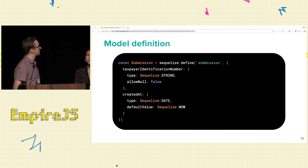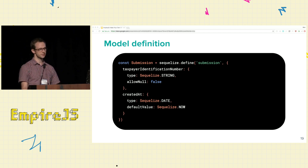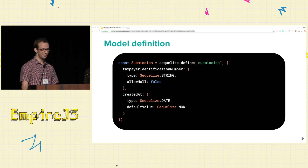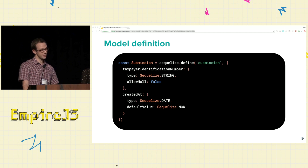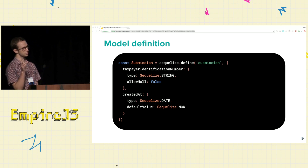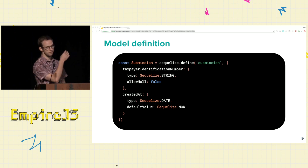We'll start with the fundamental feature of an ORM: defining your data models. In SQLize, for example — a very common ORM for Node — we defined a submission model with two fields: a Taxpayer Identification Number field, which is a unique number for a medical practice, and a created-at timestamp. You can already see clues about how the database should store that data — for example, on the TIN field we say allow null false, telling the database not to allow null in that column.